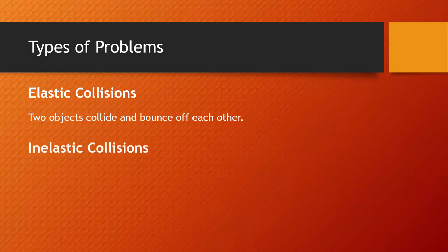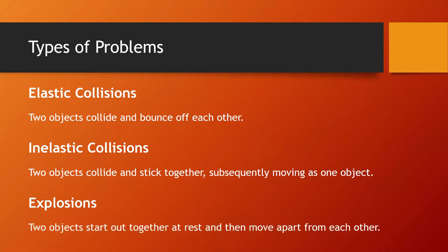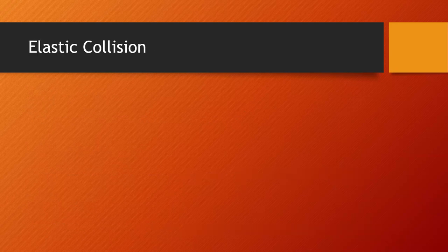The next type of problem is called an inelastic collision. This is when two objects collide and stick together, subsequently moving as if they are one object. Finally, there are problems called explosions, which are simply when two objects start out together at rest and then move apart from each other. Let's take a look at another example of an elastic collision and see how we can apply our conservation of momentum equation.